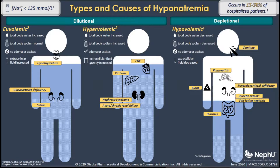Assessing the volume status in patients with hyponatremia is extremely important. In patients who are likely to be diagnosed with SIADH, the clinical signs and symptoms are difficult to spot. While there is an increase in total body water and extracellular fluid, there is an absence of edema or ascites. This is where understanding the essential diagnostic criteria is very important in patients with euvolemic hyponatremia.